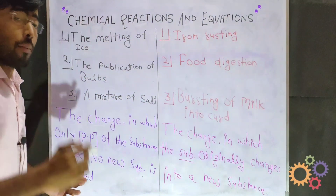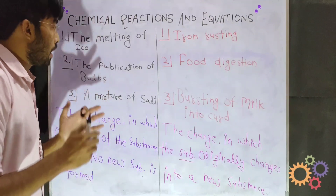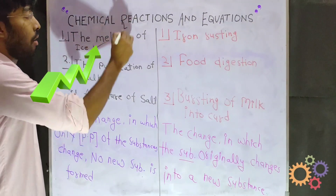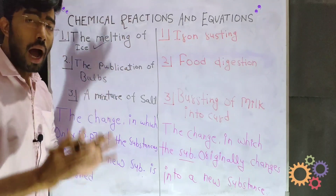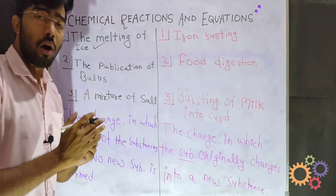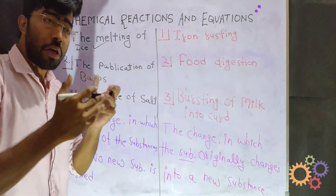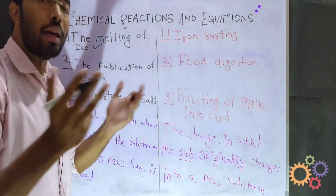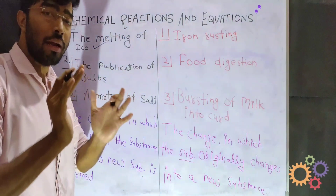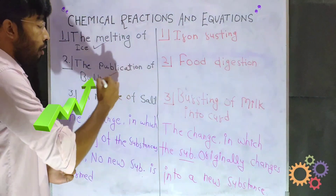The first example I will tell you — if you observe it, the first example is the melting of ice. You can see the melting of ice. Ice melts. Is there any new substance created? No, there is no new substance created.